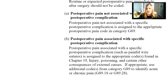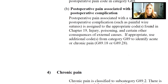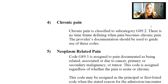If it is post-operative pain associated with a specific post-op complication — such as painful suturing, an infection, or a hematoma — that's assigned the appropriate code found in chapter 19, which is injury, poisoning, and other certain consequences of external causes. Use an additional code from category G89 to identify the acute or chronic pain if appropriate. Chronic pain is classified to subcategory G89.2. There is no timeframe defining when pain becomes chronic; we just use the provider's documentation. If the physician says chronic pain, then it's chronic pain.